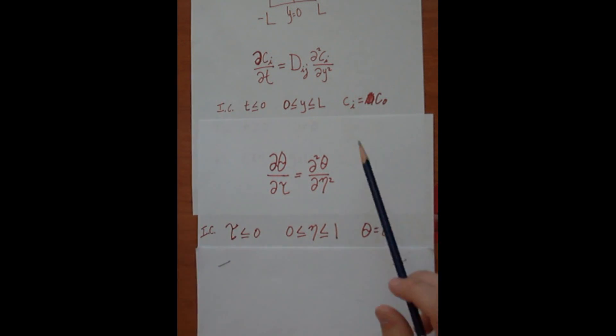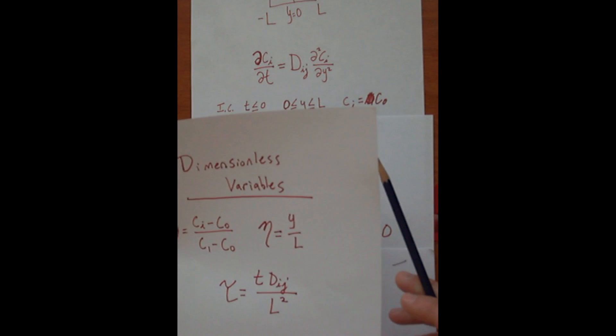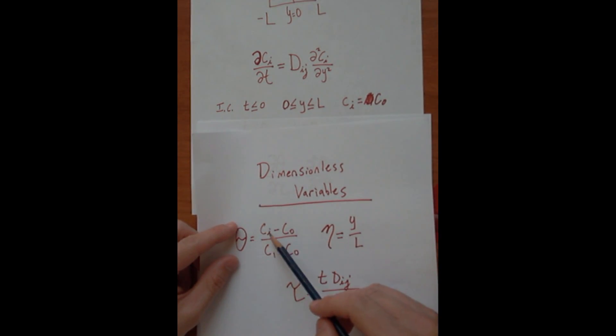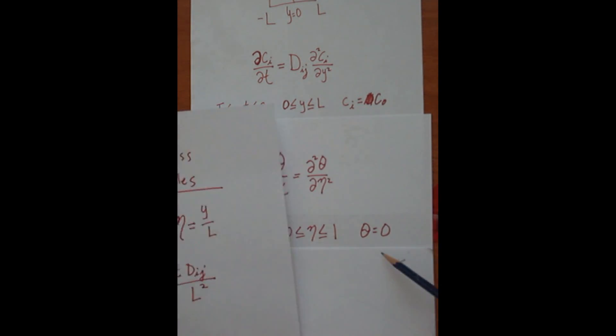Finally, the concentration is going to go from C-naught, and your normalized concentration will be zero. And that's because right here, if we put in Ci equals C-naught, you're going to get C-naught minus C-naught, and that will equal theta equal to zero.